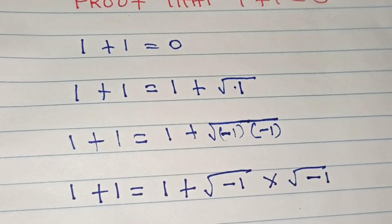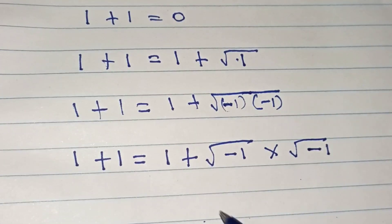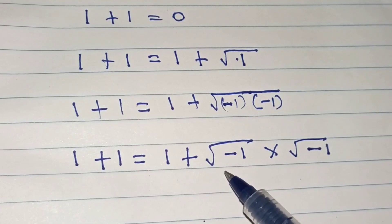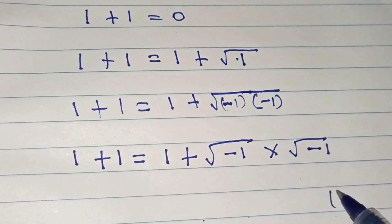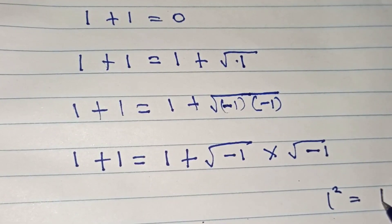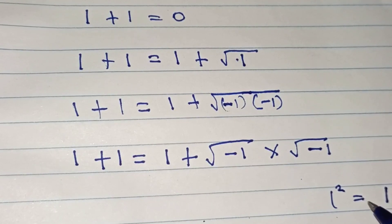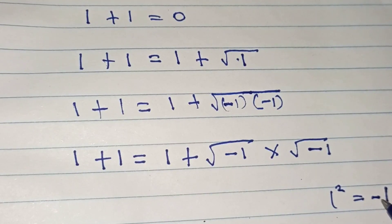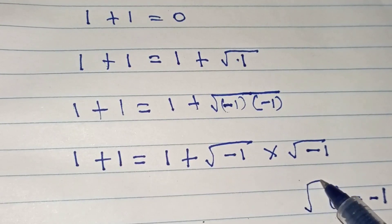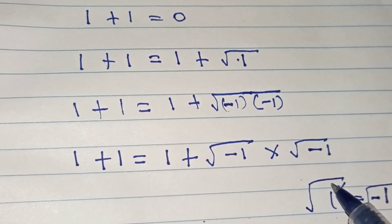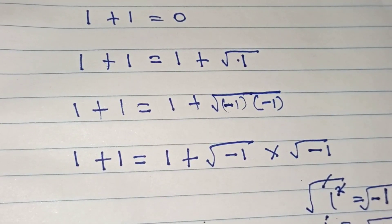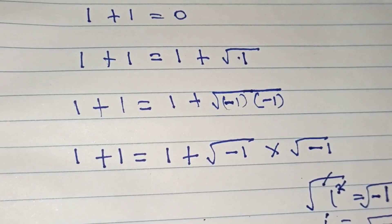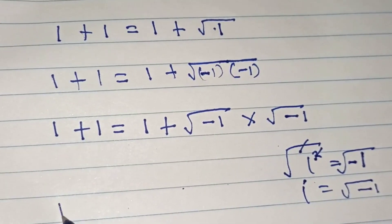From the properties of complex numbers, the square root of negative one is the same as i, because i squared equals negative one. If we take the square root of both sides, we have that i equals the square root of negative one.